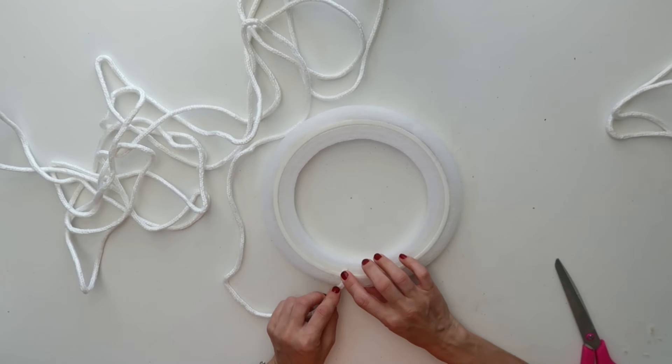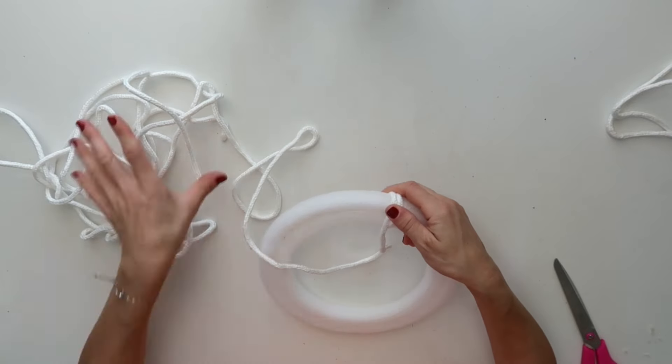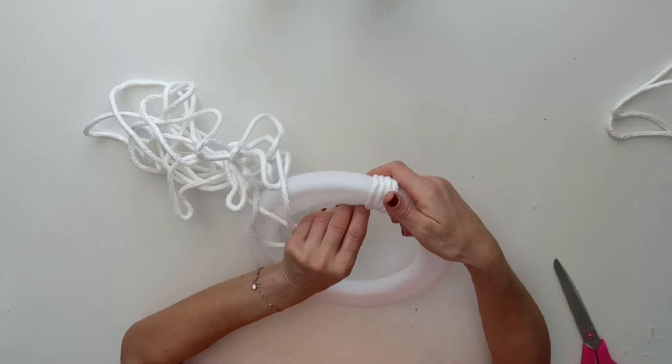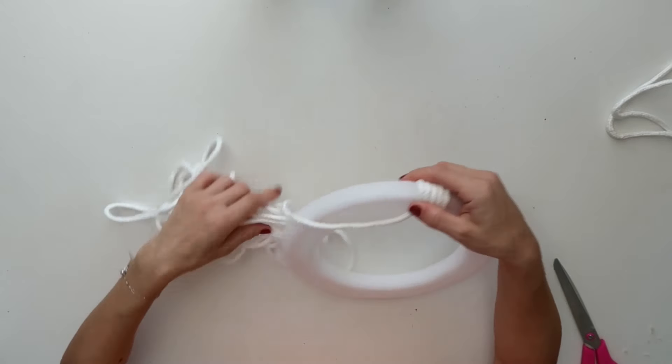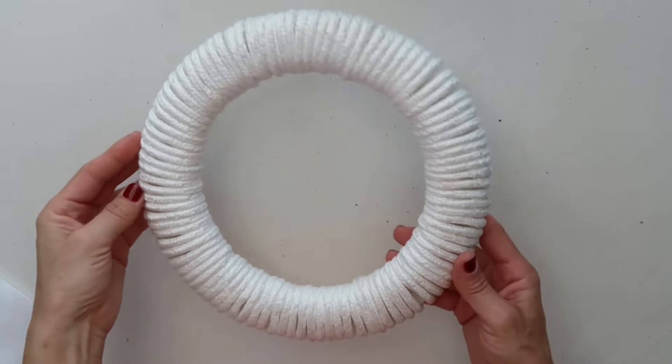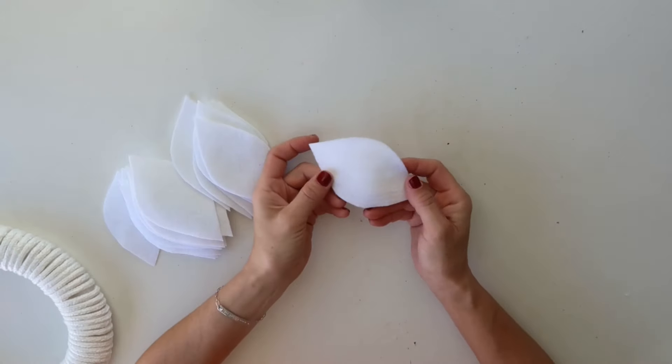So I am going to wrap this newly created wreath form with this cord. Really I just start it off with the hot glue and wrap it all the way around and secure it with the hot glue at the end as well.